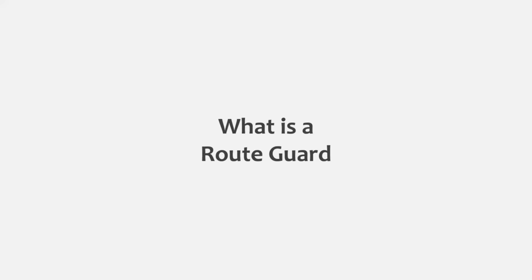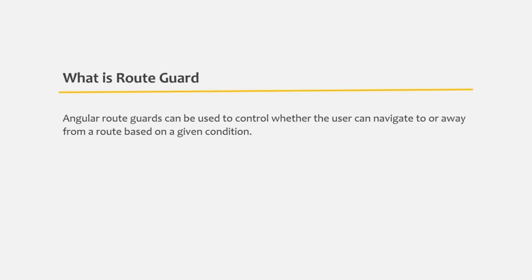So in this lecture, we will have a high-level overview of what route guards are in Angular and what are the different types of route guards. We use Angular route guards to control whether the user can navigate to a route or navigate away from a route based on a given condition. In simple words, Angular route guards help us secure the route or to perform some action before navigating into a route or leaving the route.